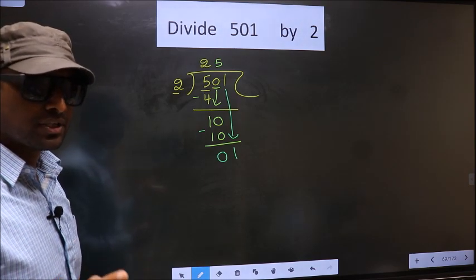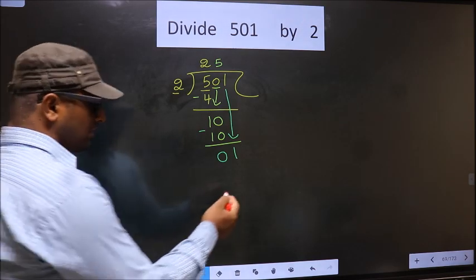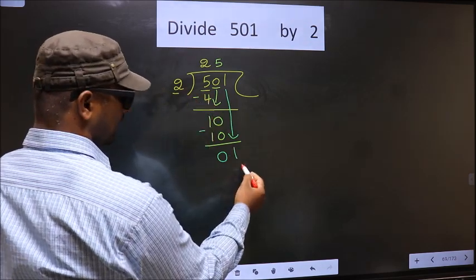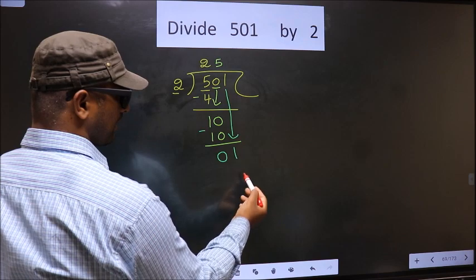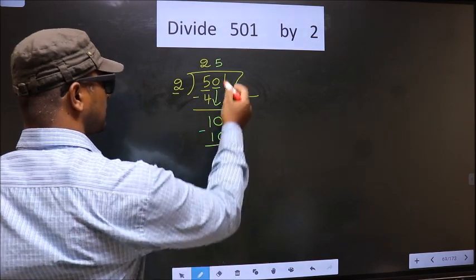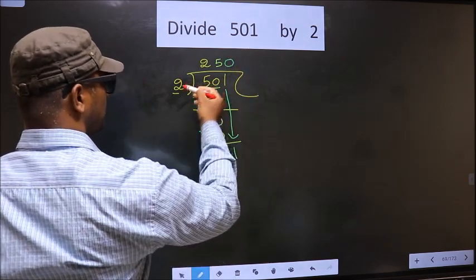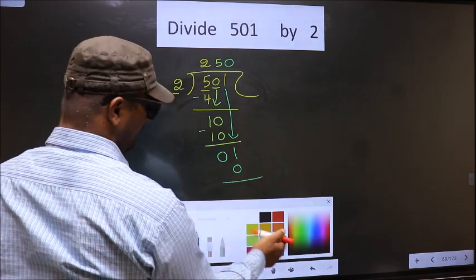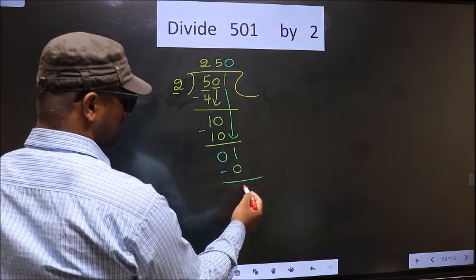Instead, what you should think of is, what number should we write here? If we write 2 here, that is larger than 1. So what we do is, we take 0 here. So 2 into 0, 0. Now you subtract 1 minus 0, 1.